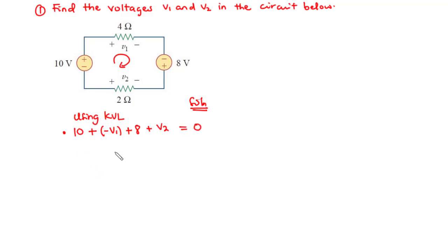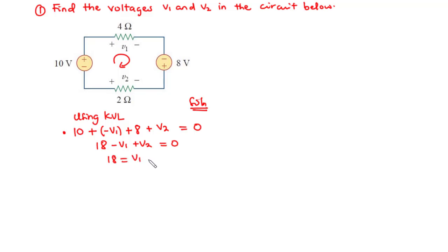Simplifying: 10 plus 8 is 18, minus v1 plus v2 equals zero. Transposing negative v1 and v2 to the right-hand side gives 18 equals v1 minus v2. Let's call this equation 1.